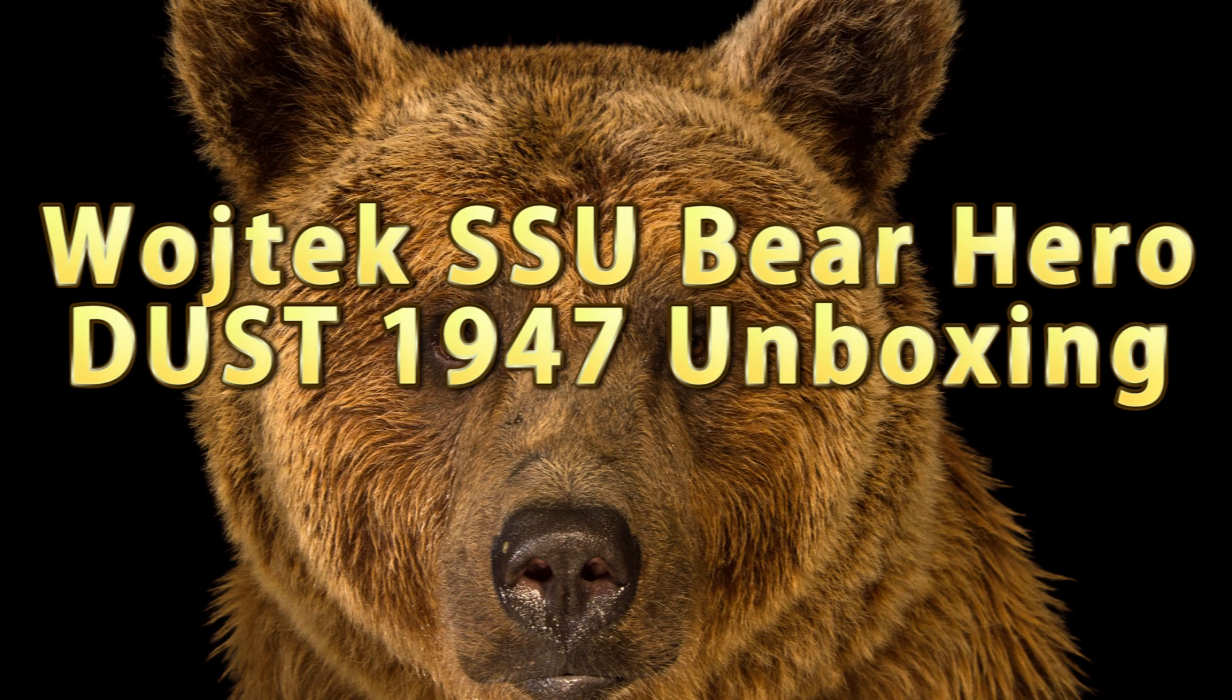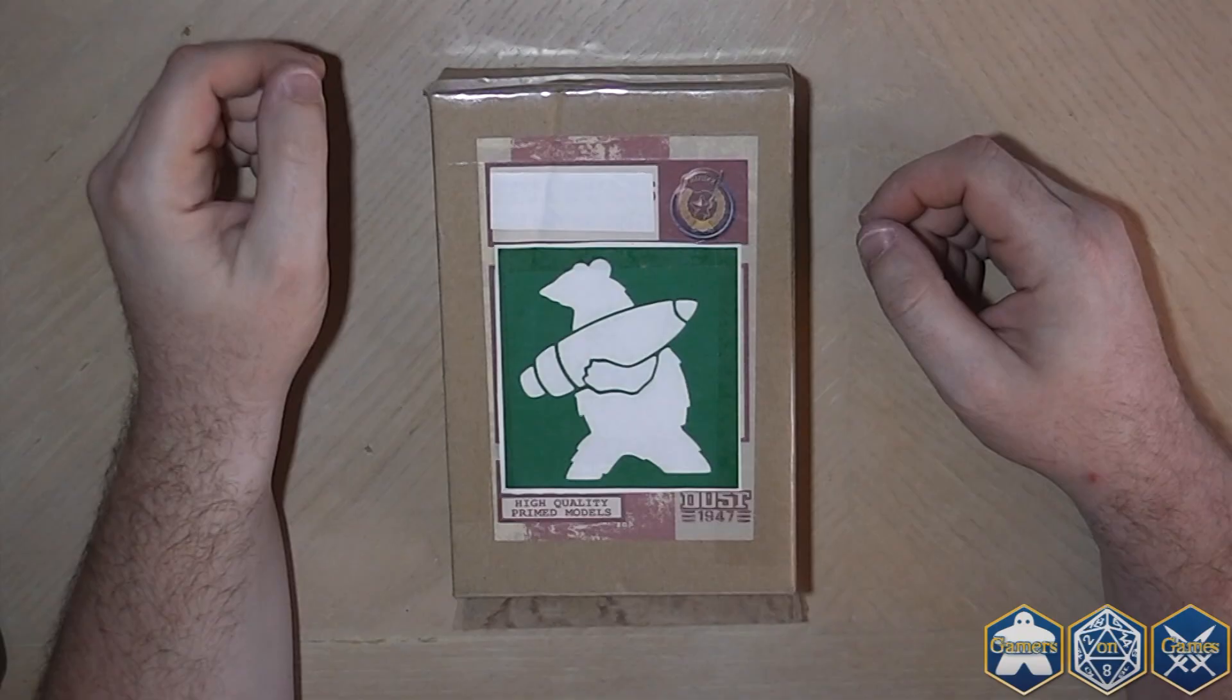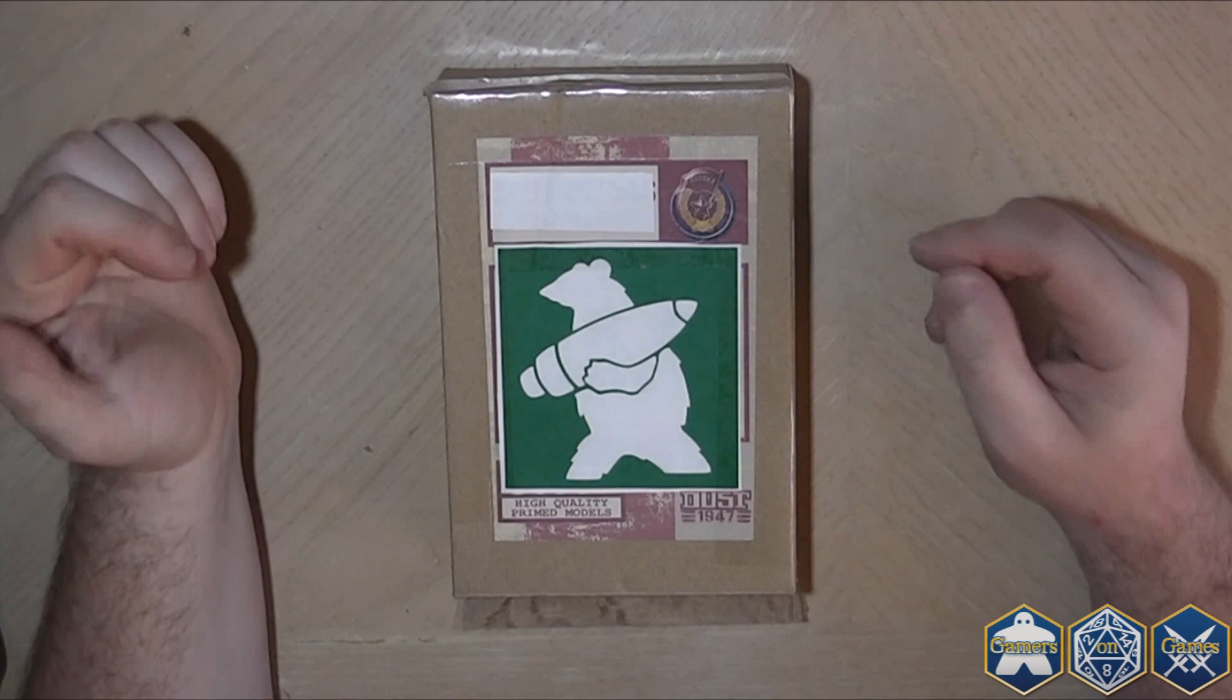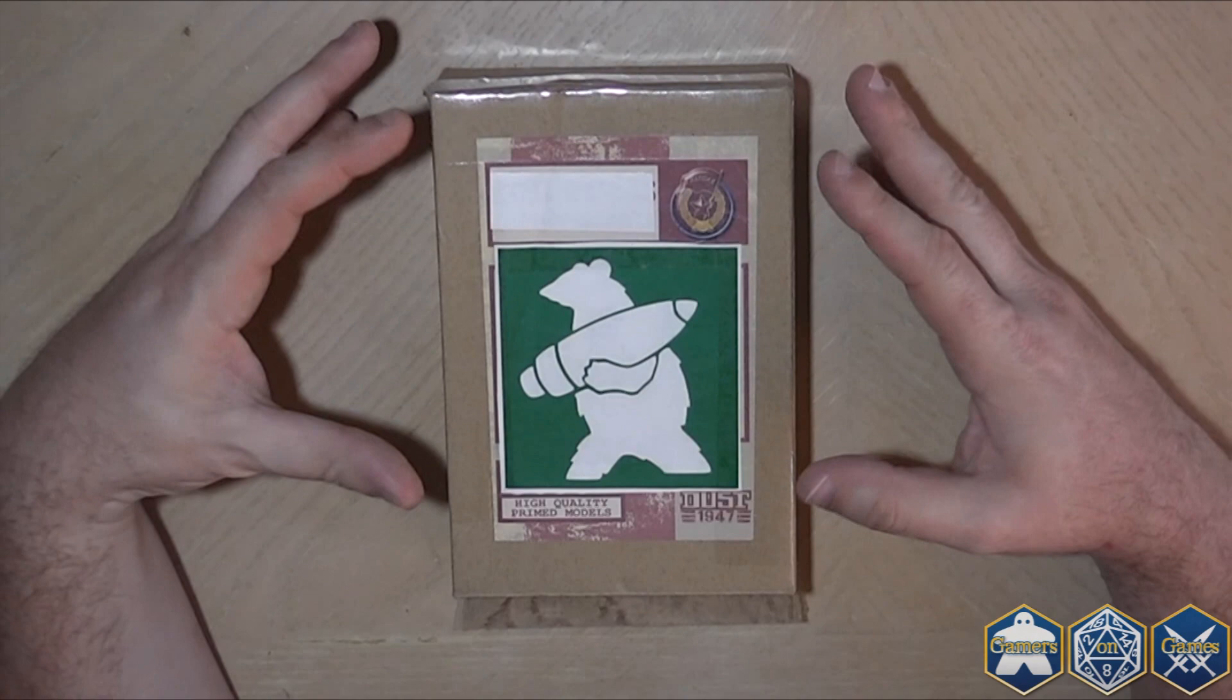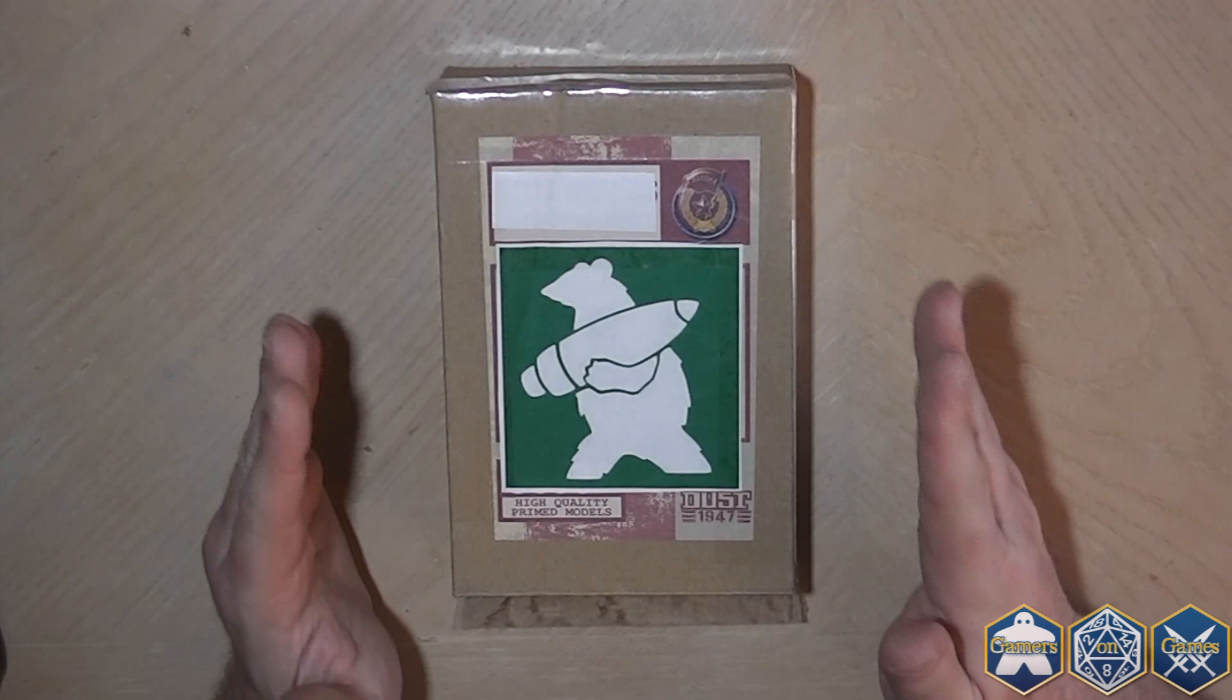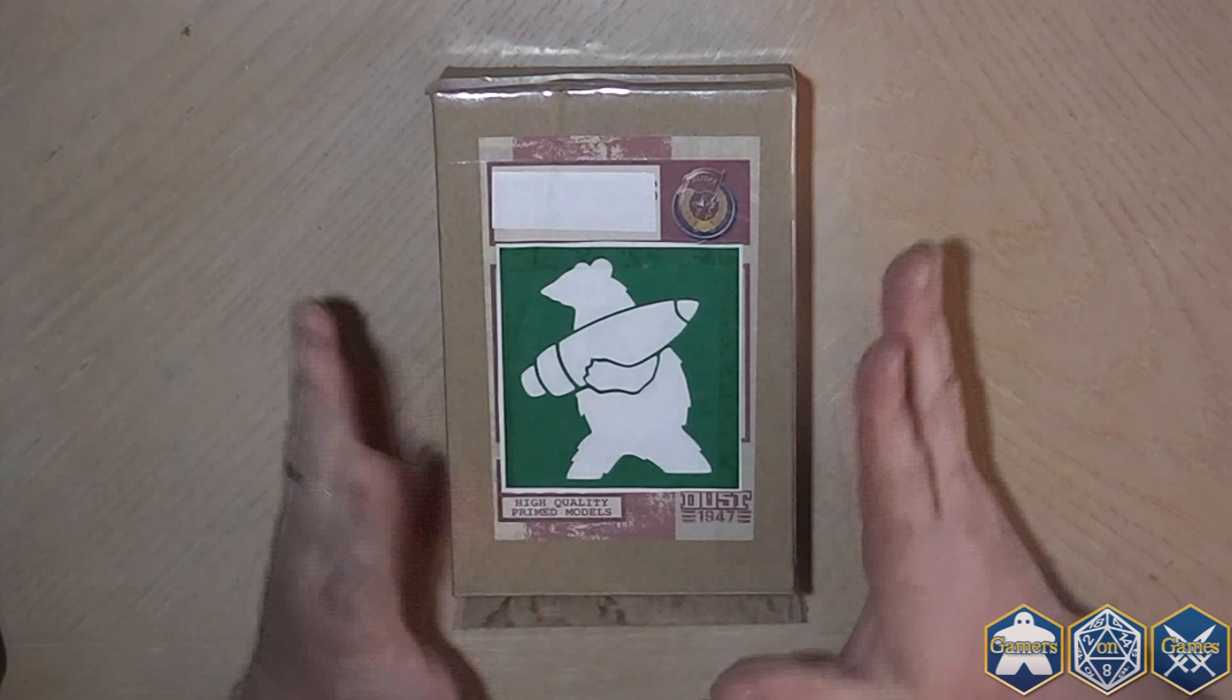Hey guys, it's Dave for Gamers on Games, and welcome back for another unboxing video. And this is going to be for a custom figure for Dust 1947, featuring the oh-so-coveted bear. Yes, this is a bear figure, custom-made, and given to us by Game Chef's Jeff, and it was designed by DeweyCat for use in Dust 1947.